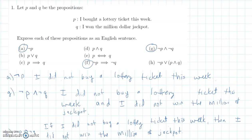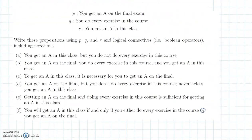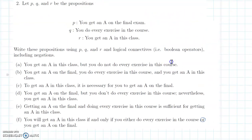Let's look at another practice problem. We have three propositions: P is 'you get an A in the final,' Q is 'you do every exercise in the course,' and R is 'you get an A in this class.' For part A: 'You get an A in this class but you do not do every exercise in this course.' The word 'but' is a contrast, but really it means a conjunction: R AND NOT Q.